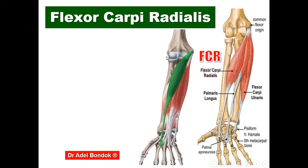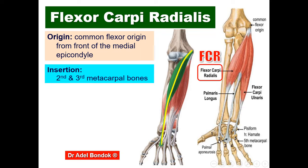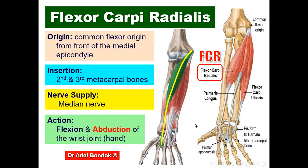Flexor carpi radialis: origin from the common flexor origin, front of the medial epicondyle. Insertion into the second and third metacarpal bones. Nerve supply: the median nerve. Action: flexion of the wrist joint and abduction of the hand.